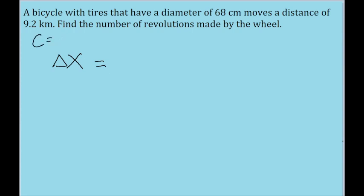Now, the circumference of a wheel, or of a circle, is equal to 2 times pi times the radius, though it can also be written as just pi times the diameter, which is given to us in the problem. So I'm going to use this form of the equation.